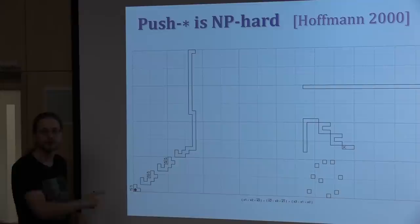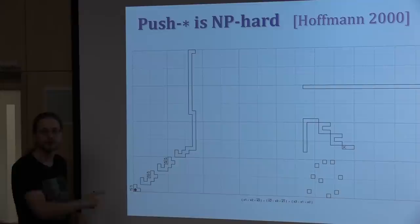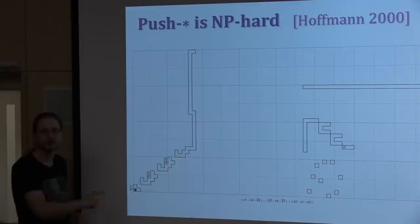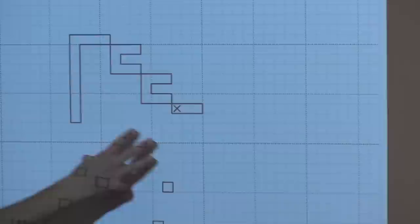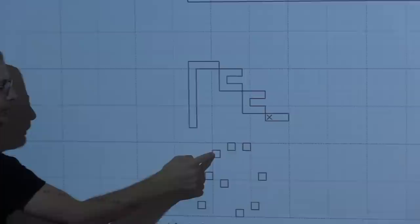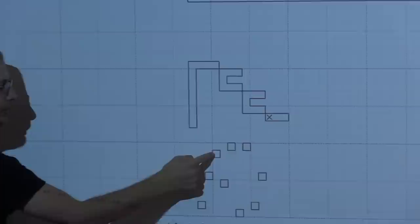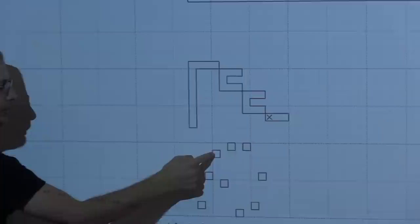The push-star reduction is by Michael Hoffman (2000). In a rectangular box with no fixed blocks and arbitrary pushing strength, all blank space outlines the structure and everything else is filled with movable blocks. The variable gadgets, the connections between variables and clauses, and the clause-checking gadgets are encoded into this grid. There are two rows per variable (true and false), and there's a hole exactly when a literal appears in a clause. You start in the variable block and make your choices from there.